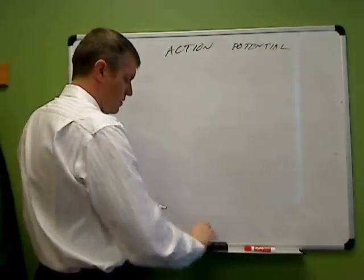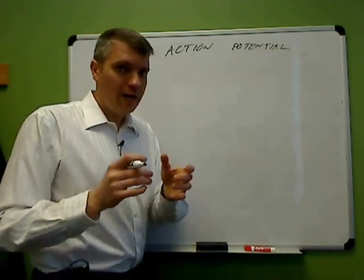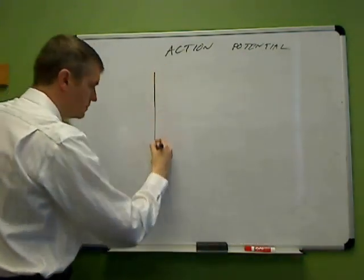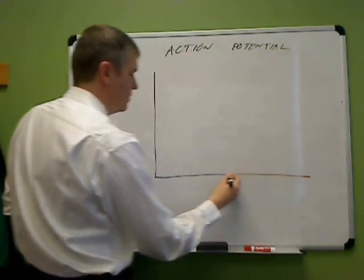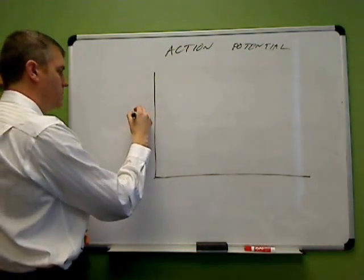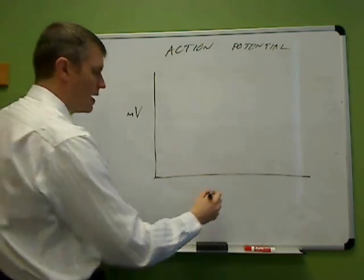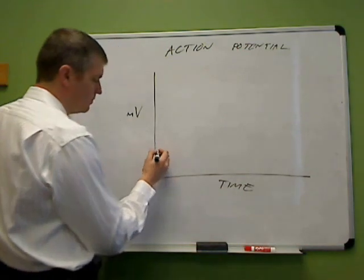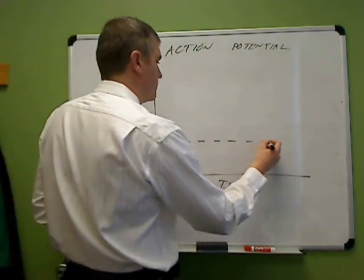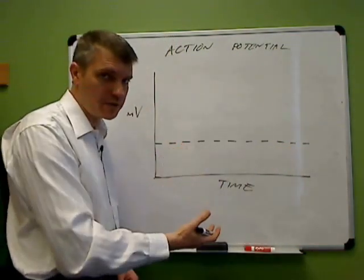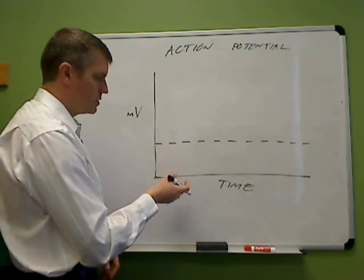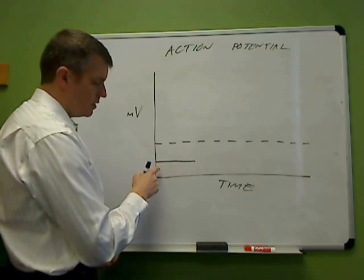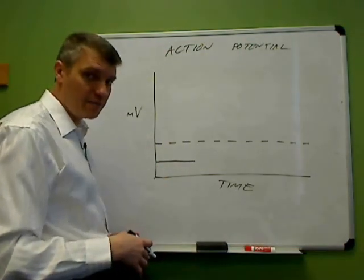Let's look at action potential a little differently. We're going to look at one small area of the membrane and look at the charge changes it undergoes as the action potential passes by. To do that, we use a graph. The y-axis is voltage in millivolts, and the x-axis is time — a very short period of time, we're talking milliseconds. There's a dotted line on the graph called threshold, and for neurons and skeletal muscle cells, that's around minus 55 millivolts. The resting potential — that minus 70 millivolts, or minus 90 millivolts for cardiac myocytes — is shown below threshold.